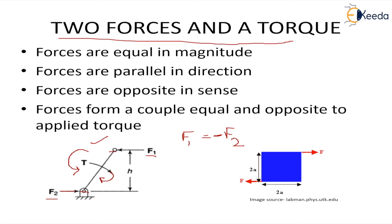If one is clockwise, the other will be anticlockwise and both torques will balance the body. So, for equilibrium,